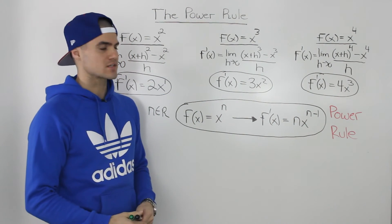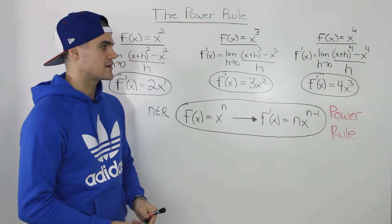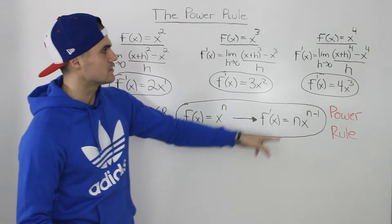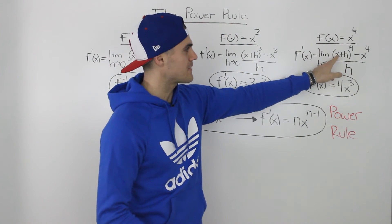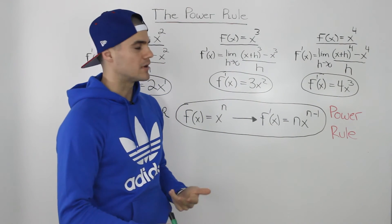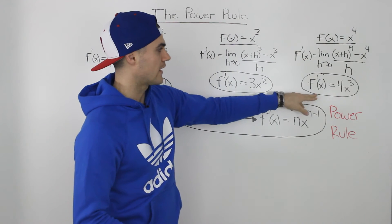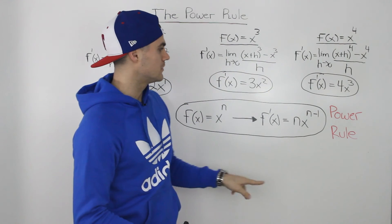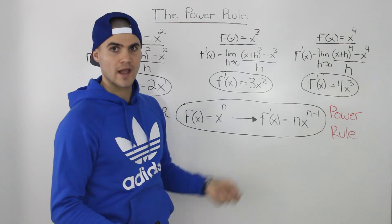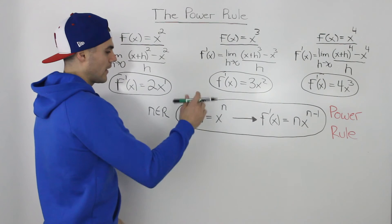This power rule is going to save us a lot of time when finding derivatives, especially with functions that have big exponents. Even with x⁴, expanding (x+h)⁴ using Pascal's triangle is a lot of work — but you can just use the power rule: bring the 4 down and subtract 1 from the exponent to get 4x³ right away.